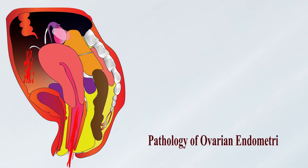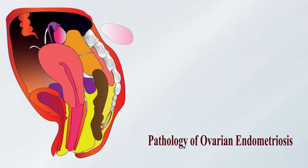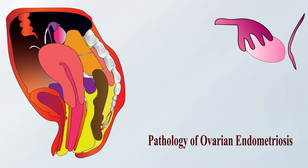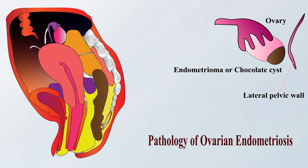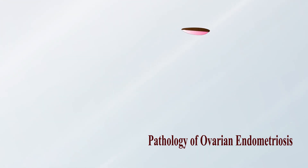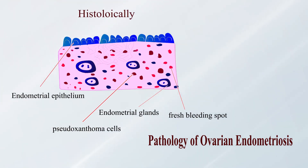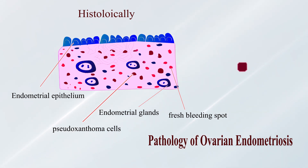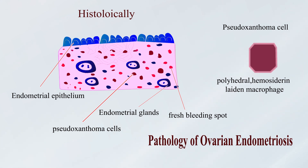Ectopic endometriosis bleeds in each menstrual cycle. In the ovaries it presents as a chocolate cyst or endometrioma, where the cyst is filled with hemorrhagic fluid giving a chocolate appearance. The cyst is located between the ovary and lateral pelvic wall, and adhesions are present on the undersurface of the ovary. Histologically there are endometrial epithelium, endometrial glands, fresh bleeding spots, and pseudoxanthoma cells — which are polyhedral hemosiderin-laden macrophages.